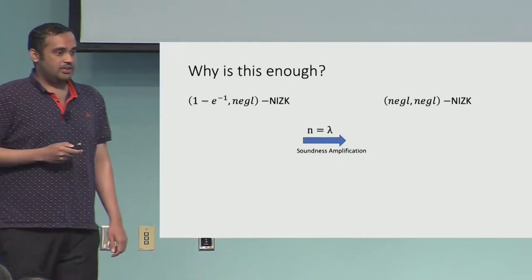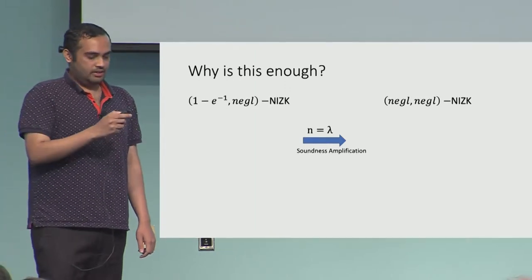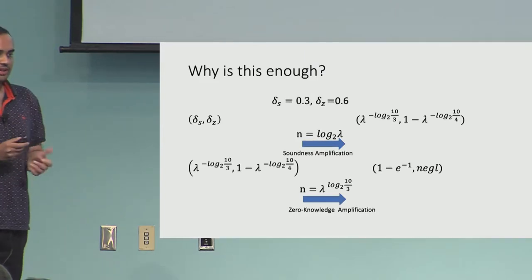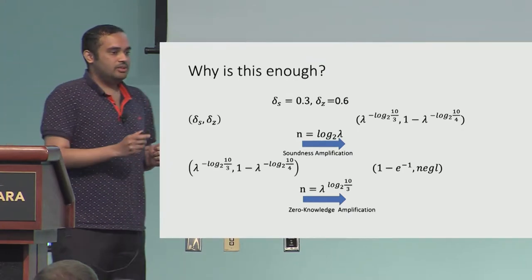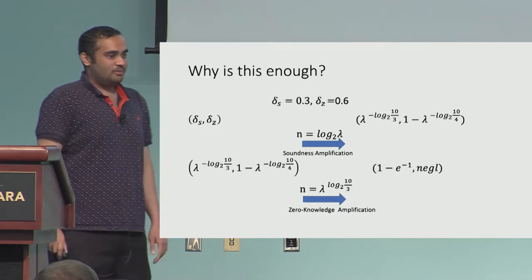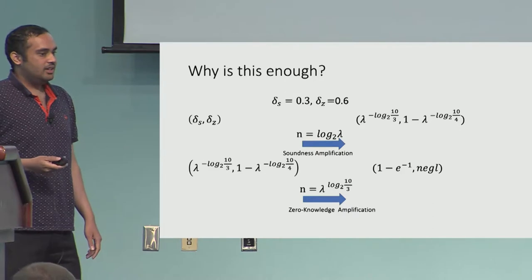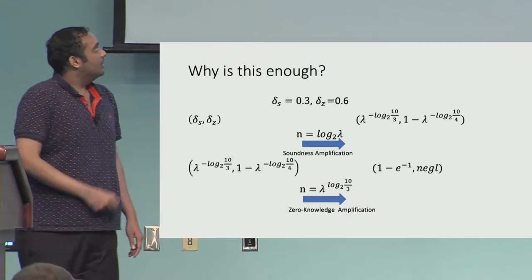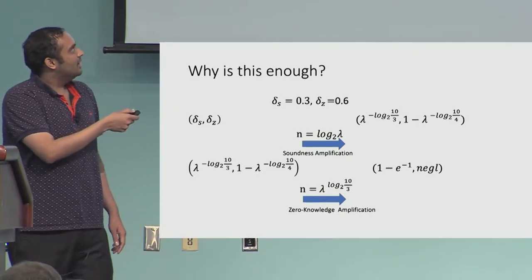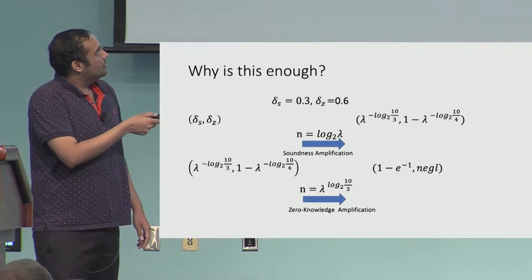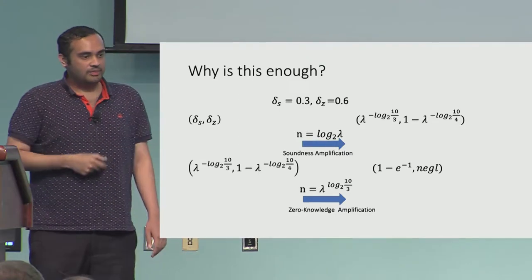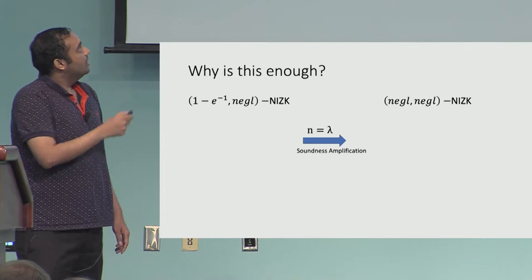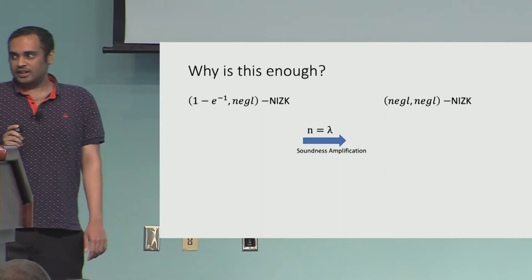These two transformations can be used one after another to construct something fully secure. For a concrete example, say δS = 0.3 and δZ = 0.6 — soundness error plus ZK error is 0.9. First apply soundness amplification with parameter log λ. Then apply zero knowledge amplification with another parameter, getting something constant and negligible. Finally, apply soundness amplification again to get something fully secure.